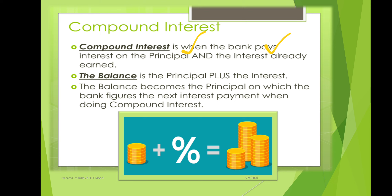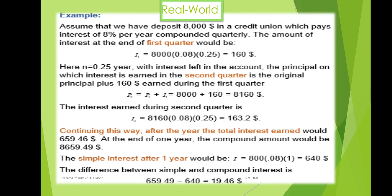In compound interest, the principal plus interest balance becomes the new principal on which the bank calculates the next interest payment. Here is a real-world example: the principal amount is eight thousand dollars, the interest rate is eight percent, equal to 0.08, and the time period is compounded quarterly. Quarterly means one-quarter of a year, equal to 0.25.